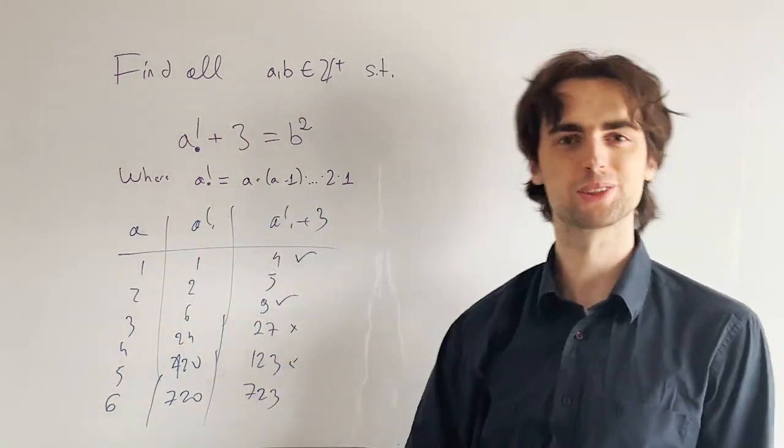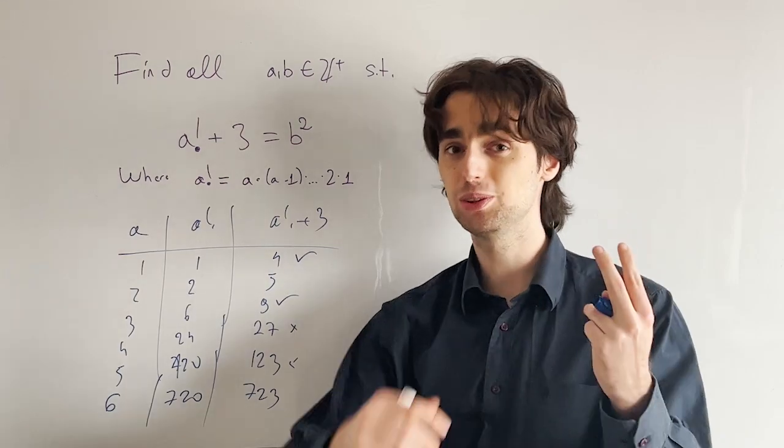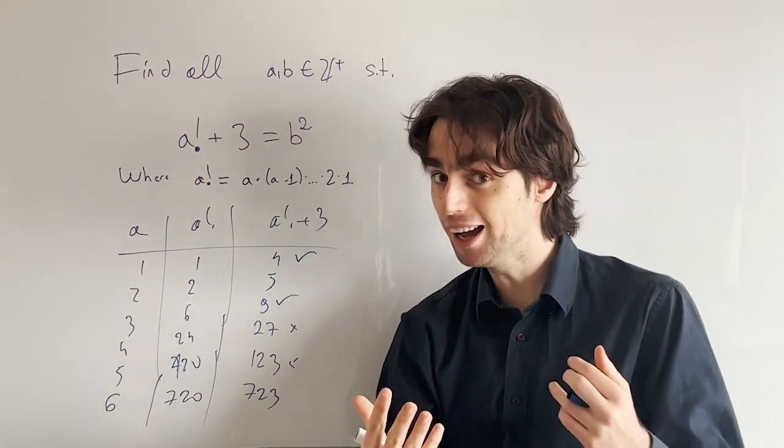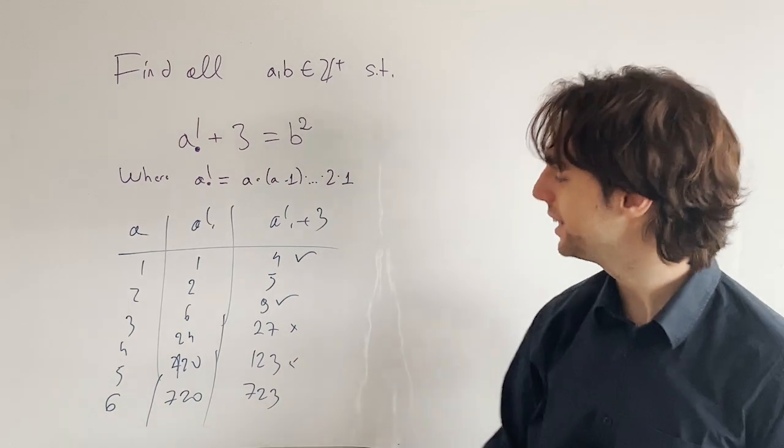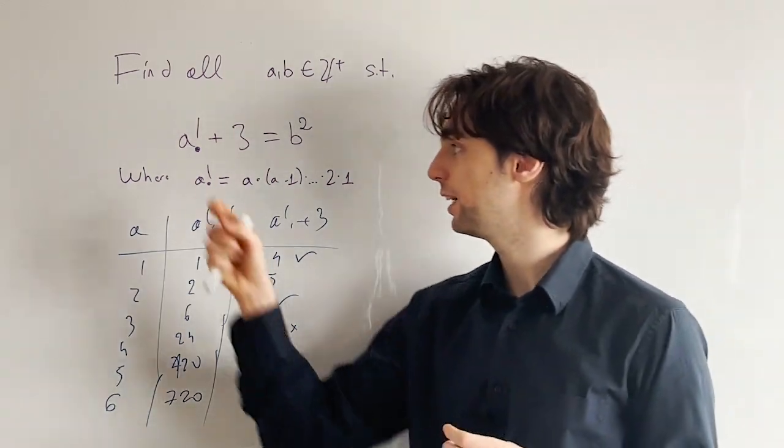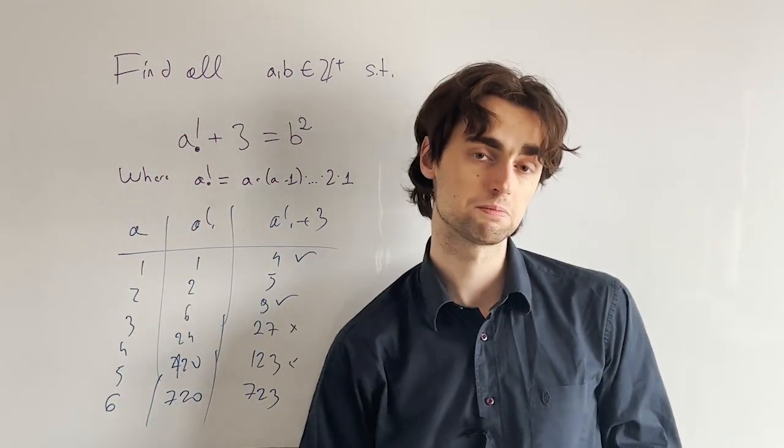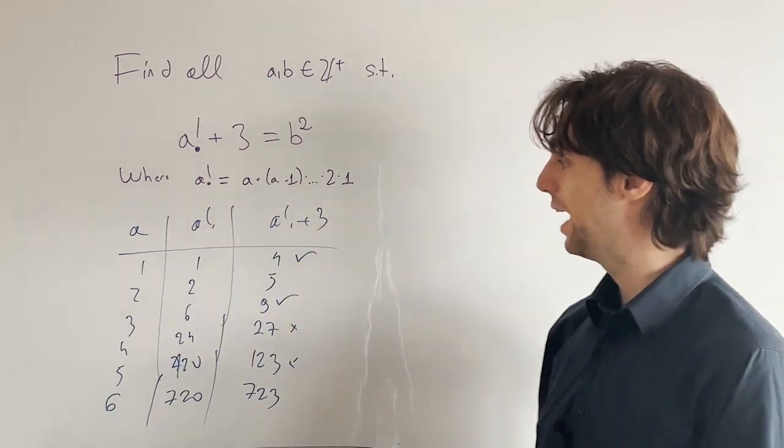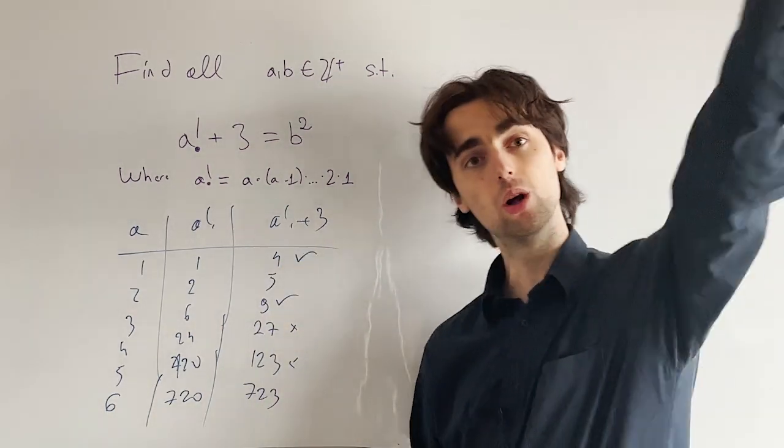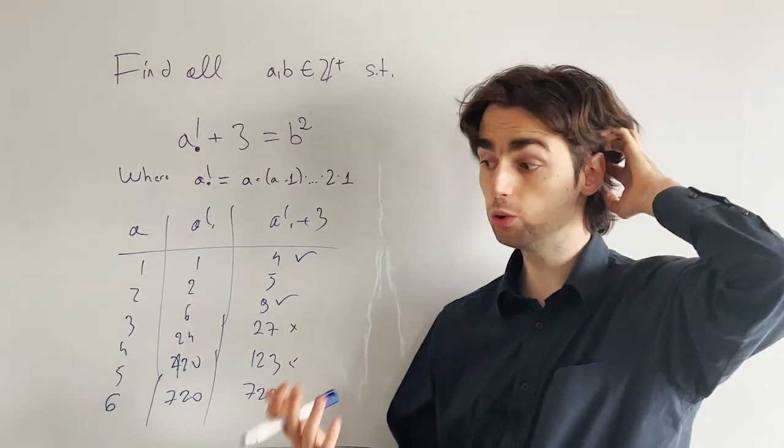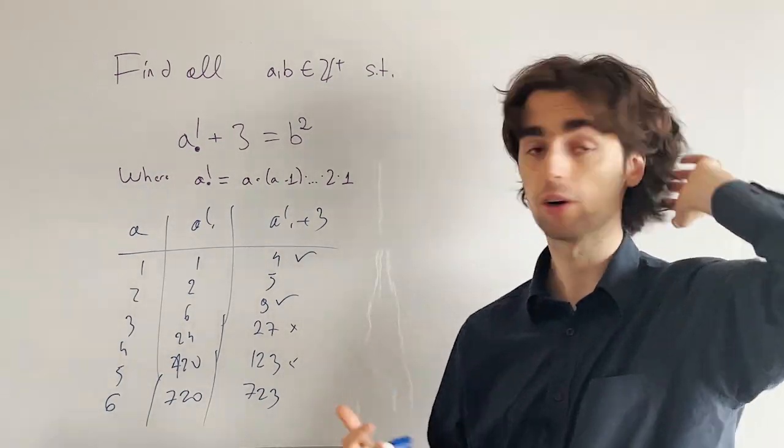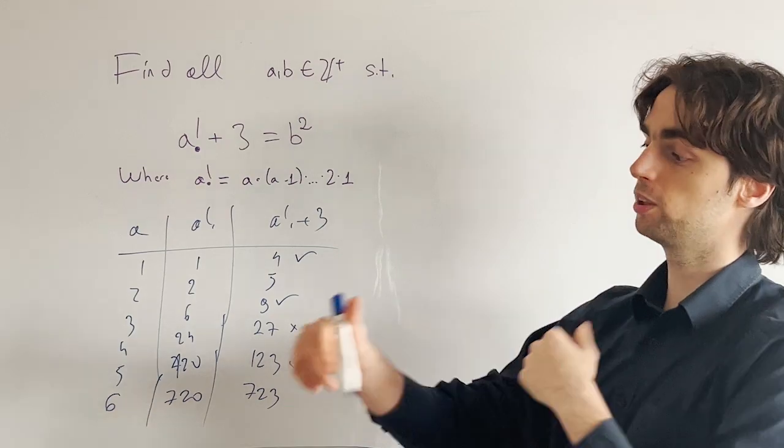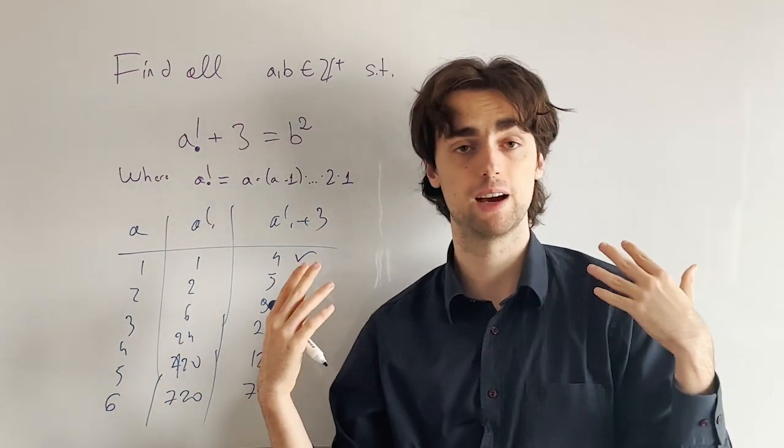Because if a factorial is greater than or equal to 6, it is 2 times 3 times 4 times 5. So we have 2 times 5, i.e. it's divisible by 10. And then that number plus 3 gives us a number that's ending in 3. And we can check all the squares and see that no square number ends in 3. And we can do this by looking at remainders when a number is divided by 10.